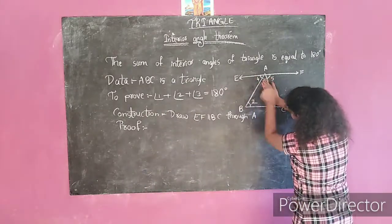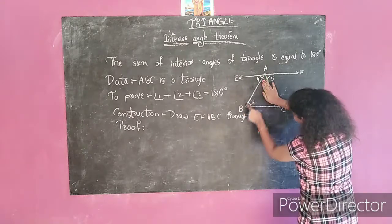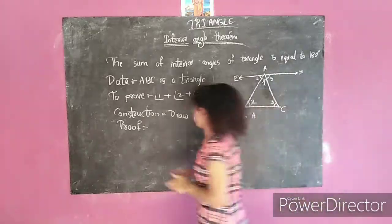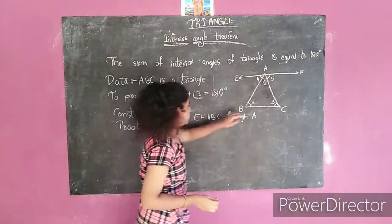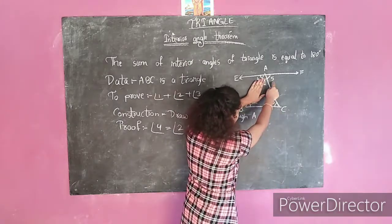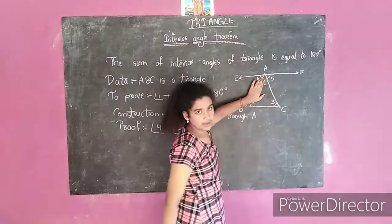If these are parallel lines, we can see that AB is a transversal, so angle 4 is equal to angle 2. If AC is a transversal, then angle 5 is equal to angle 3.